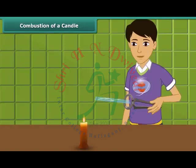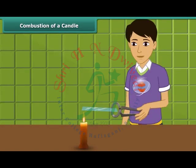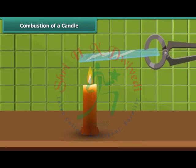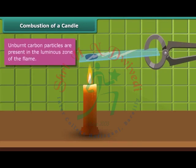Let us watch Rohan performing an activity. He is introducing a glass plate into the luminous zone of the candle flame with the help of a pair of tongs. The glass forms circular blackish spots, indicating the presence of unburnt carbon particles present in the luminous zone of the flame.